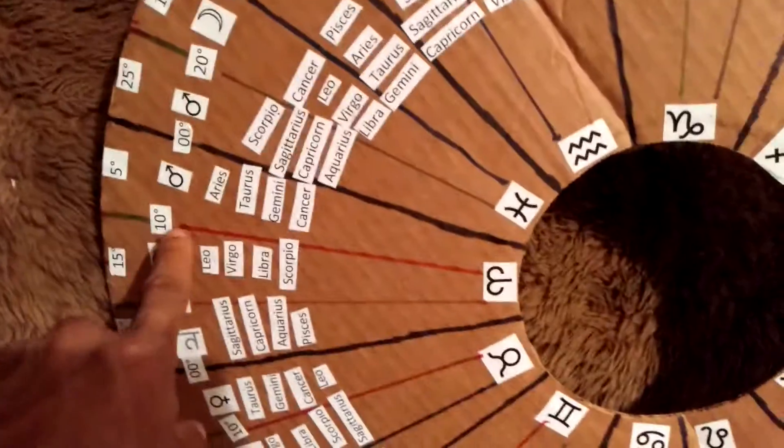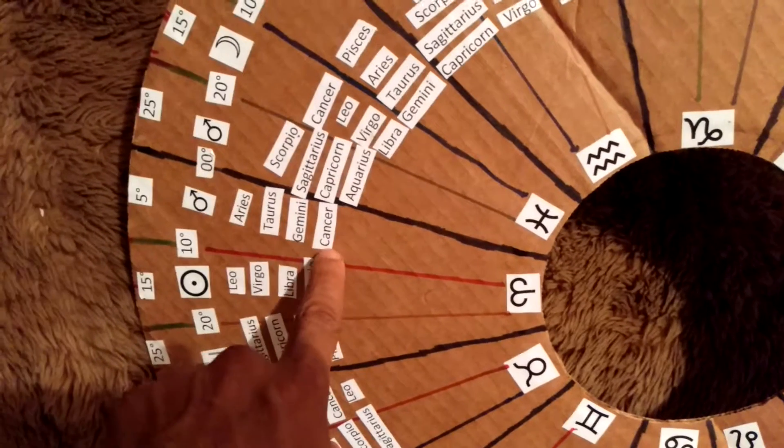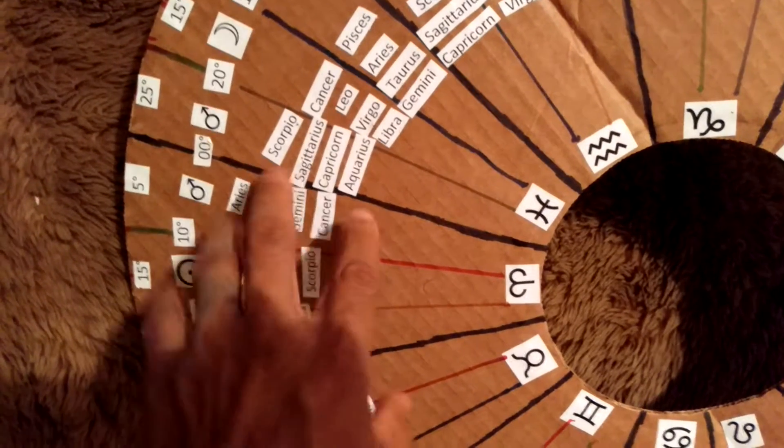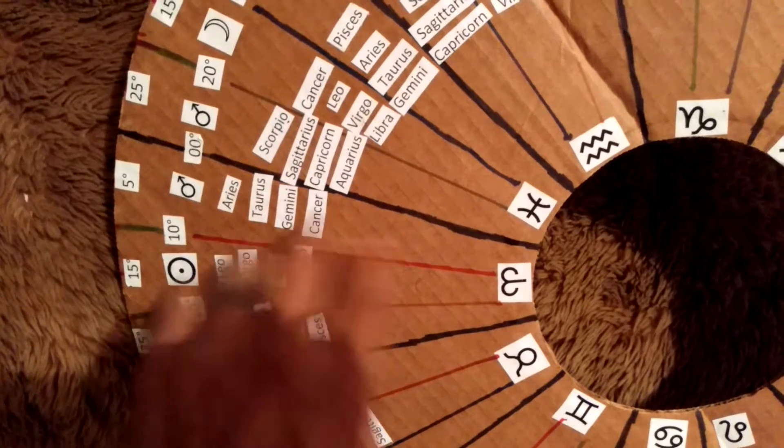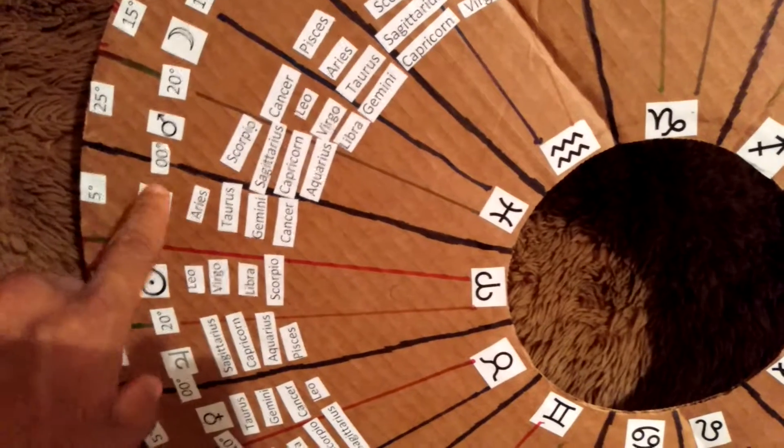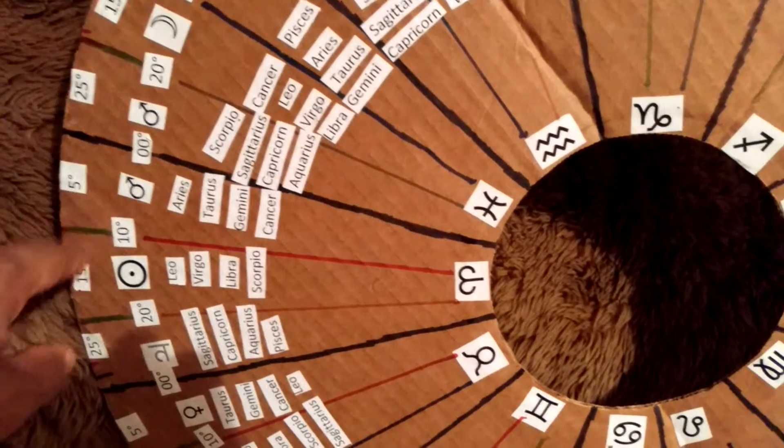Now, every 2.5 degrees, a different sign rules. Hold on, let me go back, you should know of deacons, every 10, okay, let me go back.